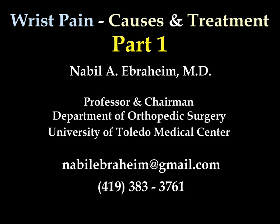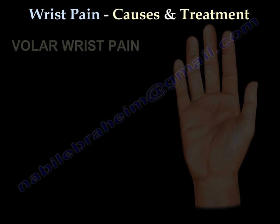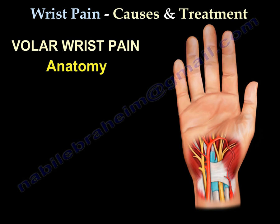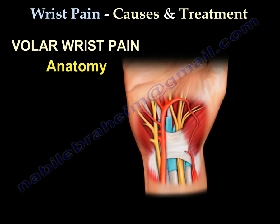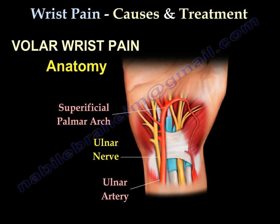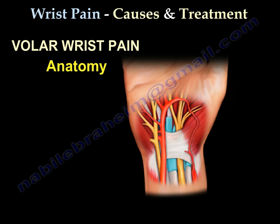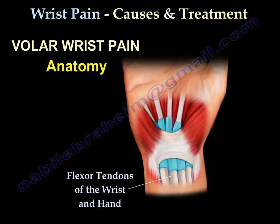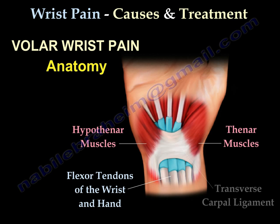Wrist pain causes and treatment: volar wrist pain. The anatomy includes the ulnar artery, ulnar nerve, superficial palmar arch, median nerve, and radial artery. It also includes the flexor tendons of the wrist and hand, the hypothenar muscles, the thenar muscles, and the transverse carpal ligament.